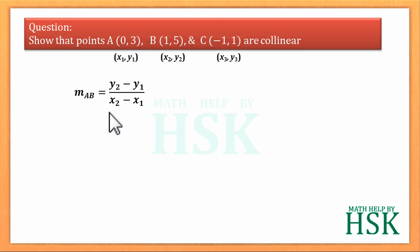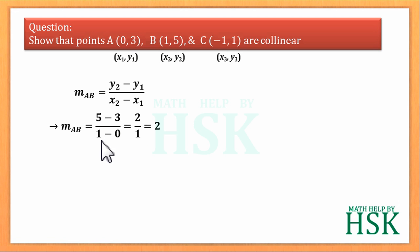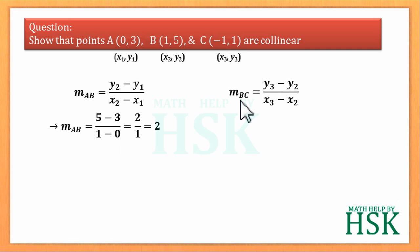m_AB = (y2 - y1) / (x2 - x1). Placing the values of x1, y1 and x2, y2 into the formula, we get m_AB = (5 - 3) / (1 - 0) = 2/1 = 2. Similarly, the slope of the line joining points B and C is given as m_BC = (y3 - y2) / (x3 - x2).